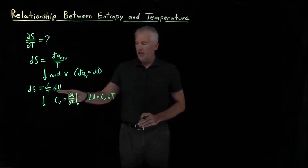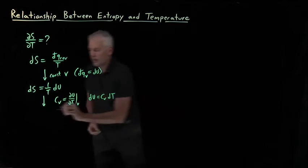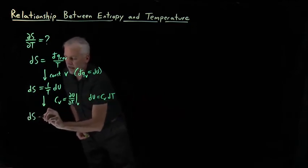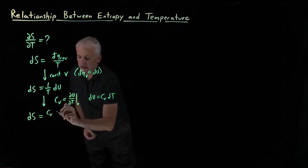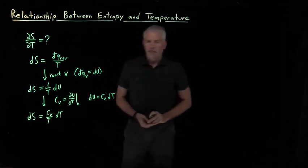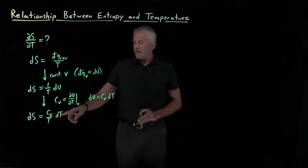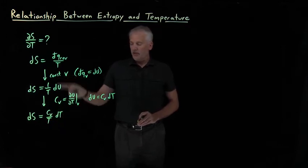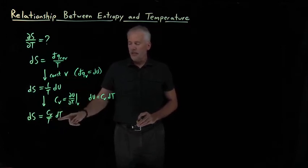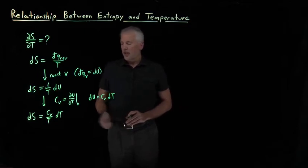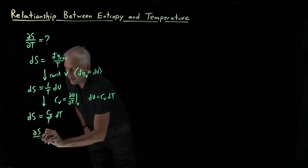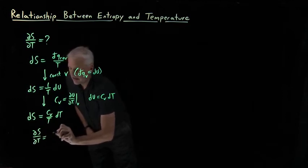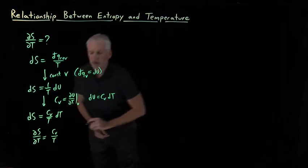We can use that expression to replace the du in this expression. So I can rewrite that the change in the entropy is writing du as cv dt and keeping the 1 over t. We found that change in entropy, if we're at constant volume, is heat capacity divided by temperature multiplied by the change in temperature. So now, if I just bring the dt over to the left-hand side, this equation can be written ds dt is equal to constant volume heat capacity over temperature.